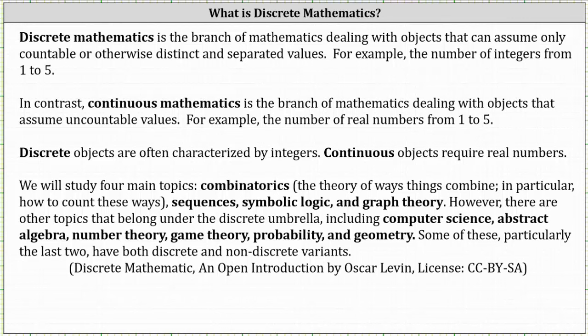Discrete objects are often characterized by integers. Continuous objects require real numbers.